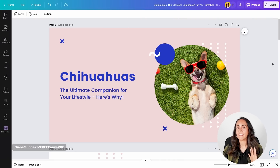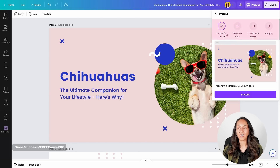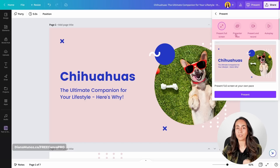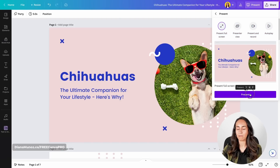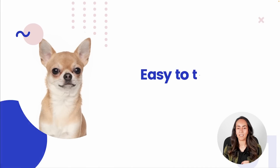To present directly from Canva, click 'Present' on top of the screen. From there you can present full screen, use two windows for a presenter view and presentation view, present and record, or autoplay. I'll go with the first option and present. I'd love to know what you think about Magic Design and the other AI features shown today — let me know in the comments.